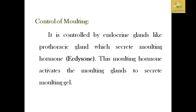What controls the molting process? The molting process is controlled by the endocrine gland — specifically the prothoracic gland. This produces the molting hormone called ecdysone. The molting gland activates the molting gel.